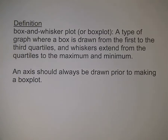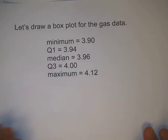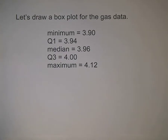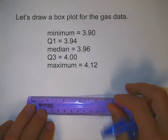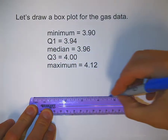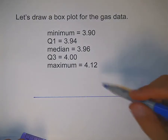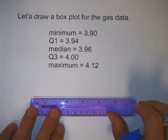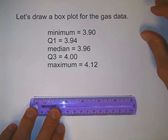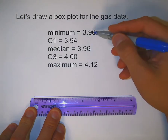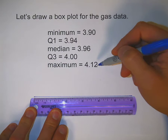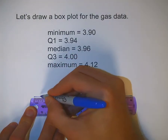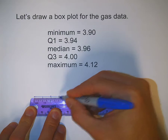An axis should always be drawn prior to making a box plot. So I'm going to make a box plot for the gas data. I've reproduced the five-number summary here. I'm going to start by making an axis, drawing it here. We're going to be making the box plot above the axis, so when you're drawing this on your own, make sure you leave some space above the axis. I need to scale my axis — my smallest value is $3.90 and my largest value is $4.12, so a good scale would be by nickels, a $0.05 scale. I'd start at $3.85 and end at $4.15. I'm going to start by making my tick marks, half an inch apart. I like to use a ruler any time I'm making an axis.